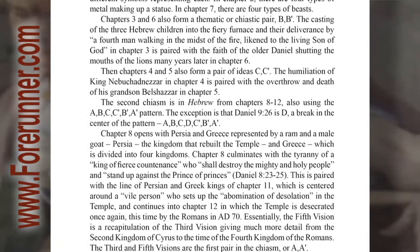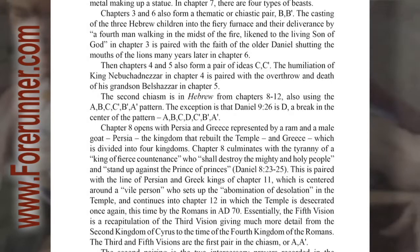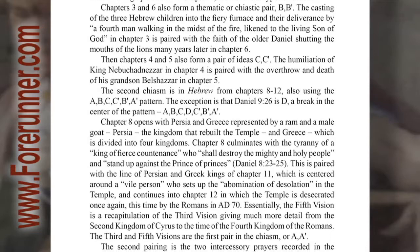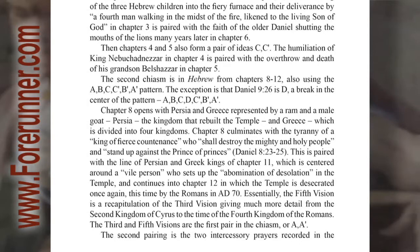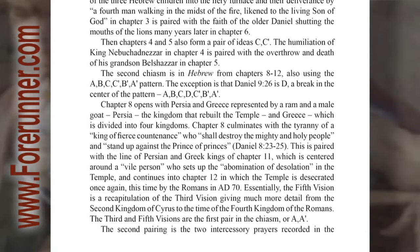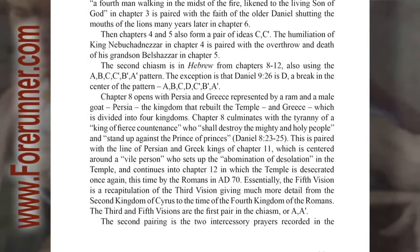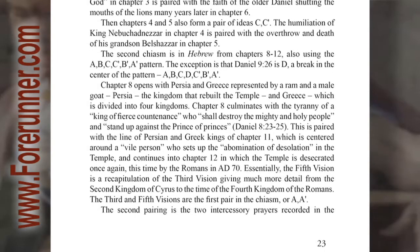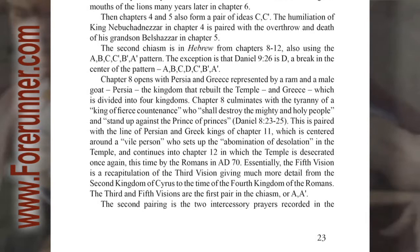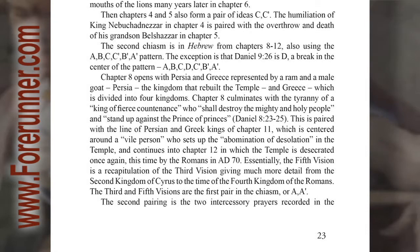Chapters 3 and 6 also form a thematic or chiastic pair, B, B prime. The casting of the Hebrew children into the fiery furnace and their deliverance by a fourth man walking in the midst of the fire, likened to the living son of God in chapter 3, is paired with the faith of the older Daniel shutting the mouths of the lions many years later in chapter 6. Then chapters 4 and 5 also form a pair of ideas, C, C prime. The humiliation of King Nebuchadnezzar in chapter 4 is paired with the overthrow and death of his grandson Belshazzar in chapter 5.